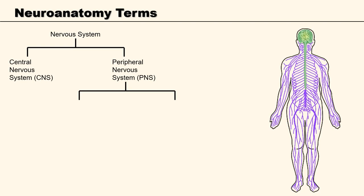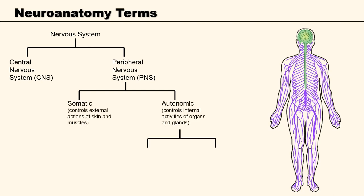And the peripheral nervous system, which is every other nerve in the body. The PNS can be further subdivided into somatic and autonomic nervous systems. In the crudest of terms, the somatic nervous system is the stuff we have conscious control over, such as skin and muscles, whilst the autonomic nervous system is the stuff we don't have control over, like the secretion of glands, the actions of the digestive tract, or the vasoconstriction or dilation of blood vessels.